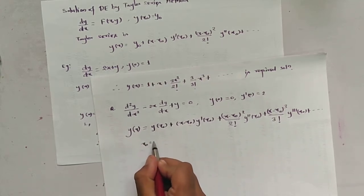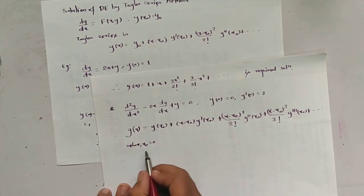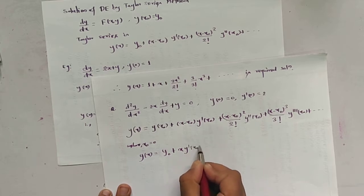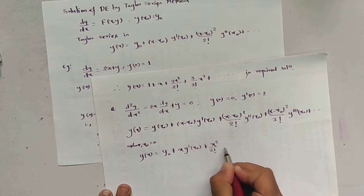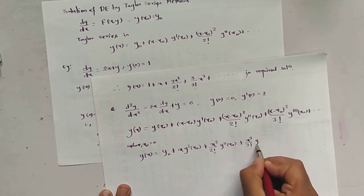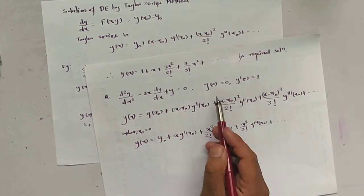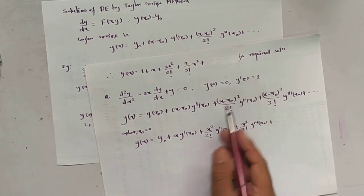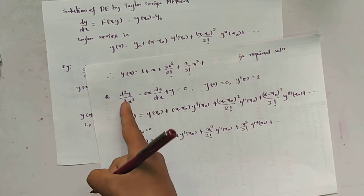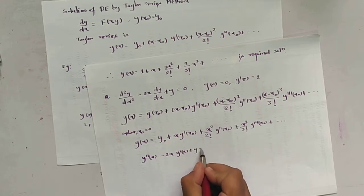We know that x₀ = 0, so it becomes y(x) = y₀ + x·y'(0) + x²/2! · y''(0) + x³/3! · y'''(0) + ··· The given conditions are y(0) = 0 and y'(0) = 2. The equation is y''(x) − 2x·y'(x) + y(x) = 0.